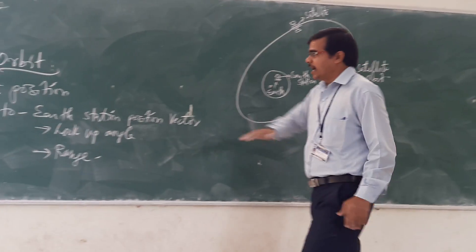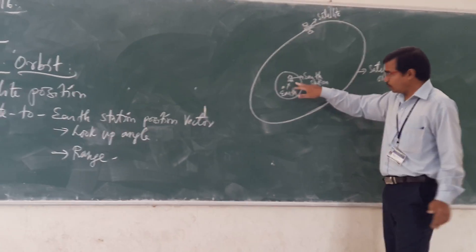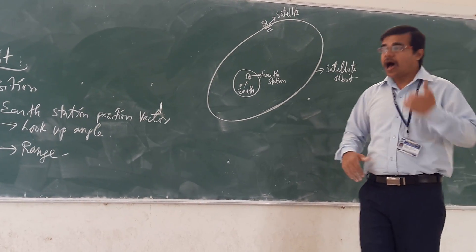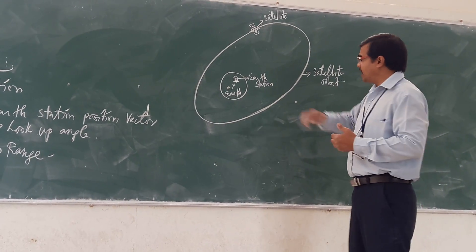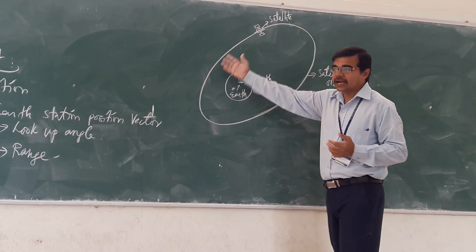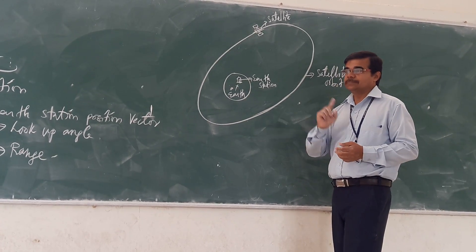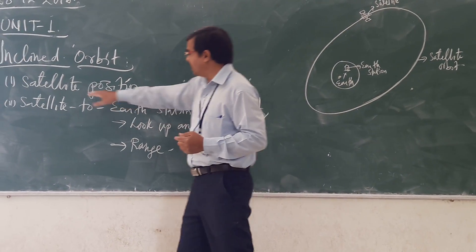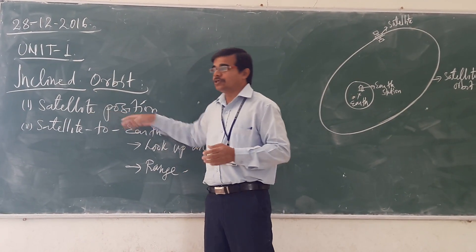So there is one parameter that is satellite position. Since the satellite is continuously rotating, its position changes over time. At any given time, what is the satellite position? Where is it located? This is the first key parameter we need to track.